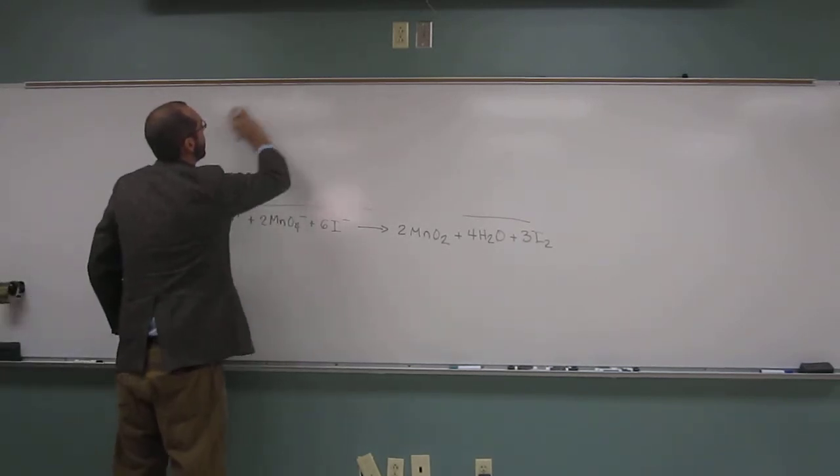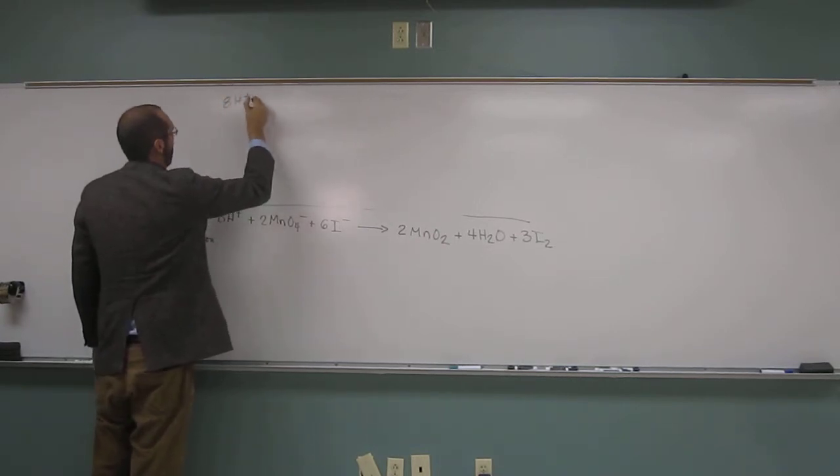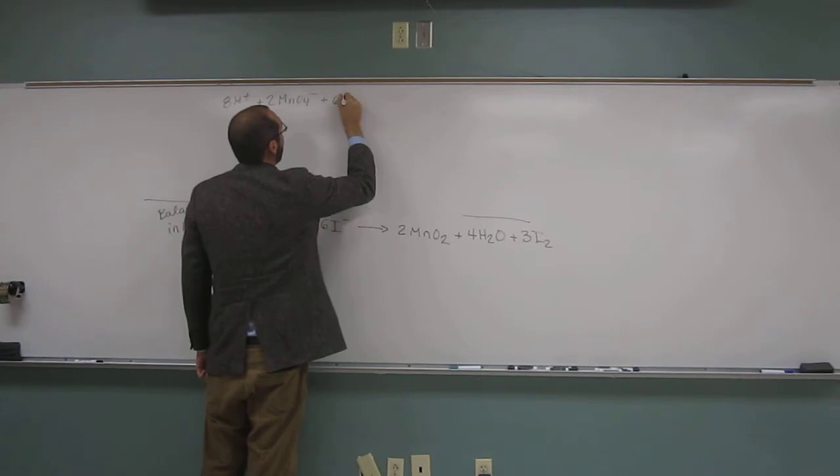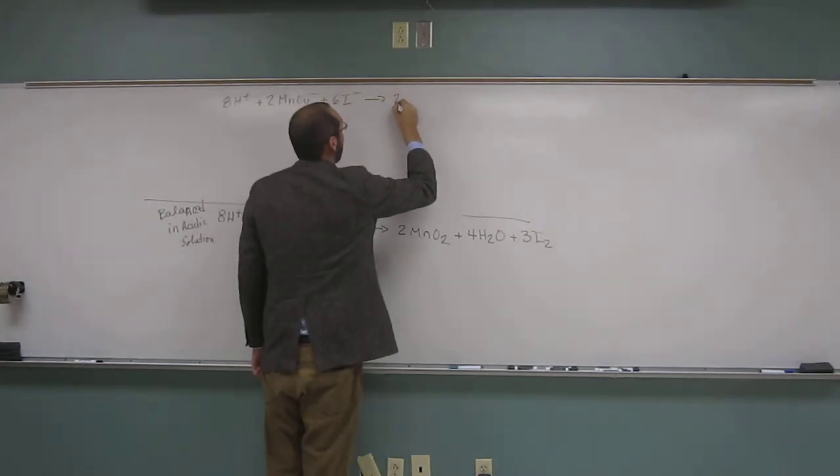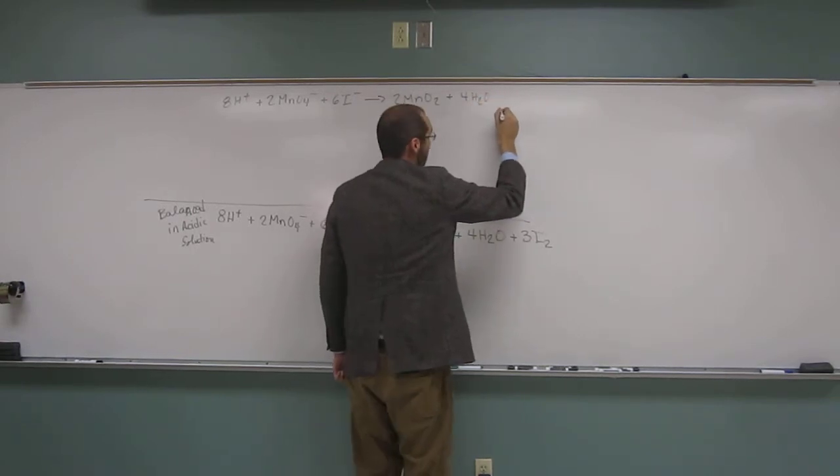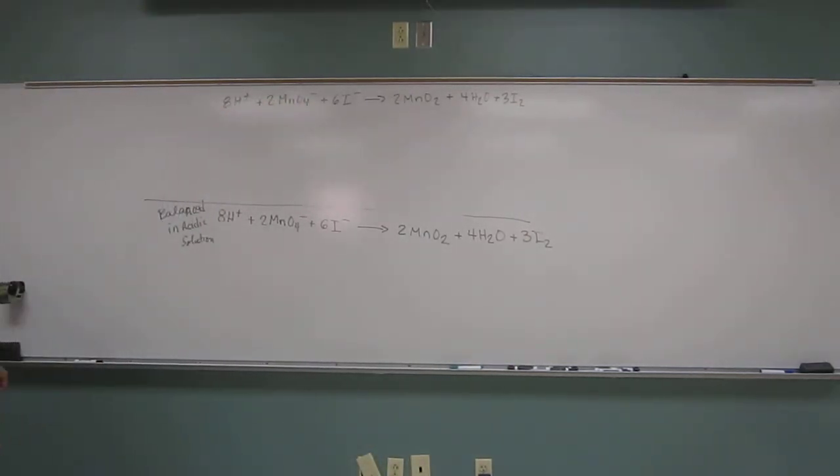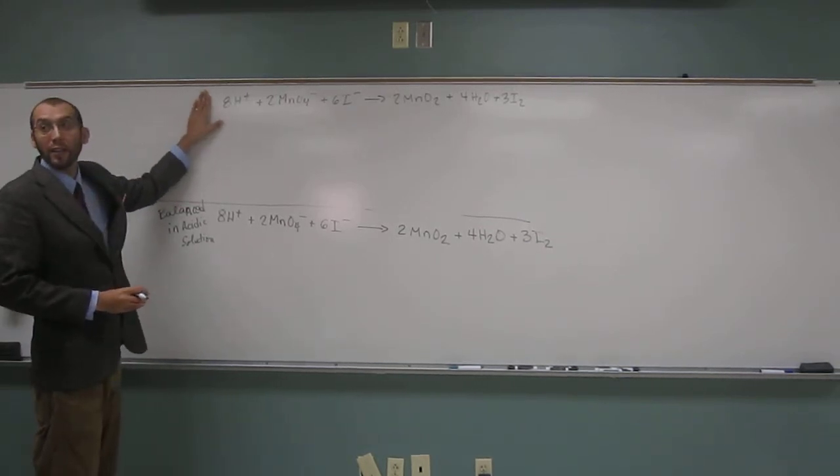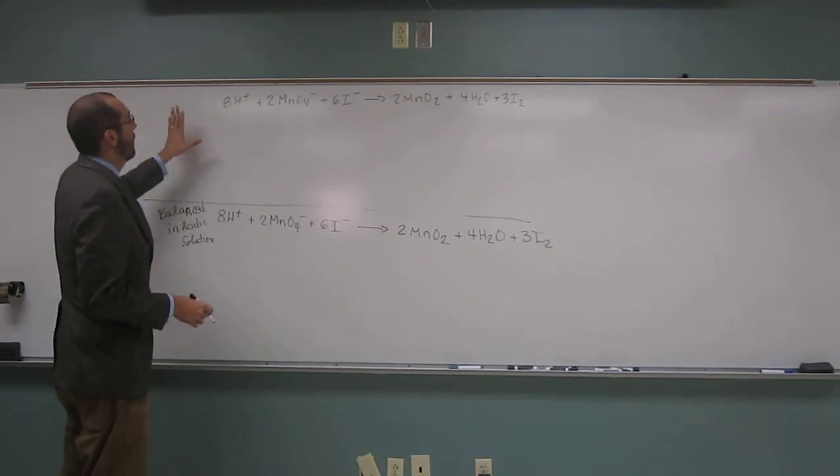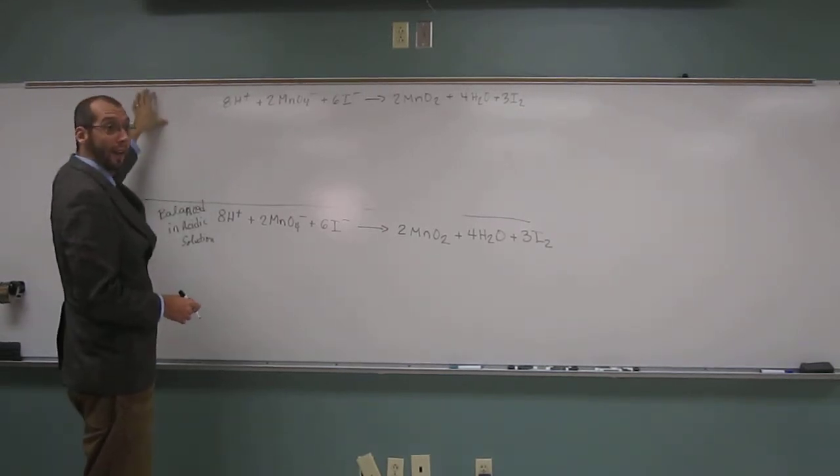Let's finish balancing this thing. I'm going to rewrite this equation up here. Acidic—we want basic. So how do we change from acidic to basic? We're going to have to add hydroxide ions. We have to add the same amount of hydroxide ions as we have protons. Since we have eight protons, we're going to add eight hydroxides, like that.